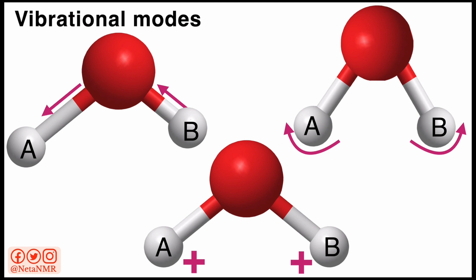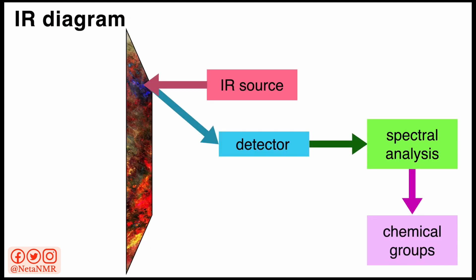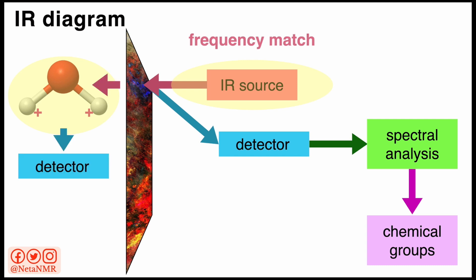Each of these vibrational modes in a specific functional chemical group has a specific vibrational frequency, and this is what we see in IR spectra. Let's go back to the IR diagram, where we've seen that we irradiate the sample with infrared radiation. If the frequency of the infrared radiation matches the vibrational frequency of the molecule — and this can be a match between the IR frequency and the frequency of any of the vibrational modes in any of the functional groups in the molecule — then the radiation is absorbed by the molecule.